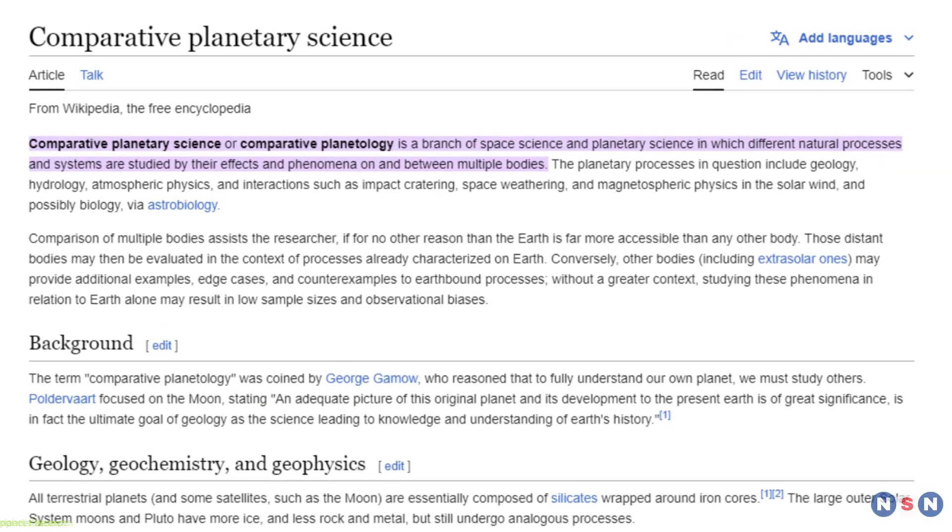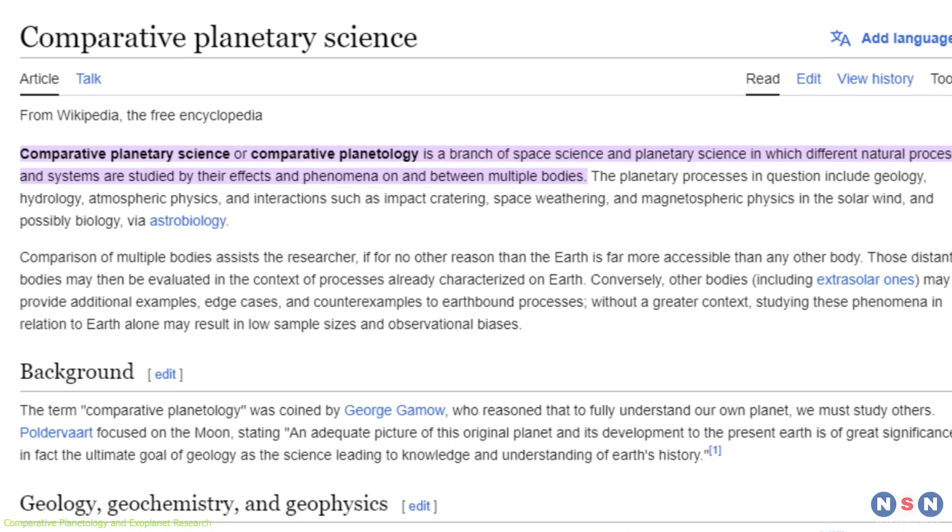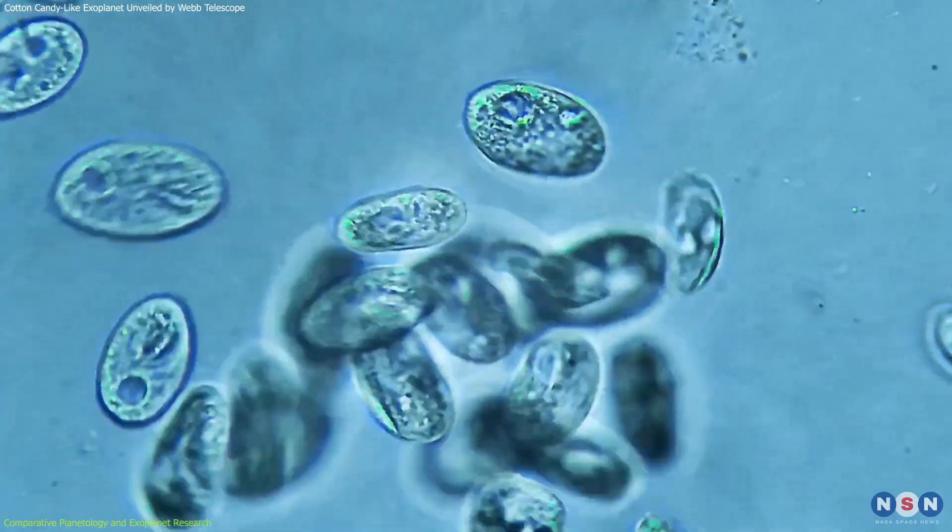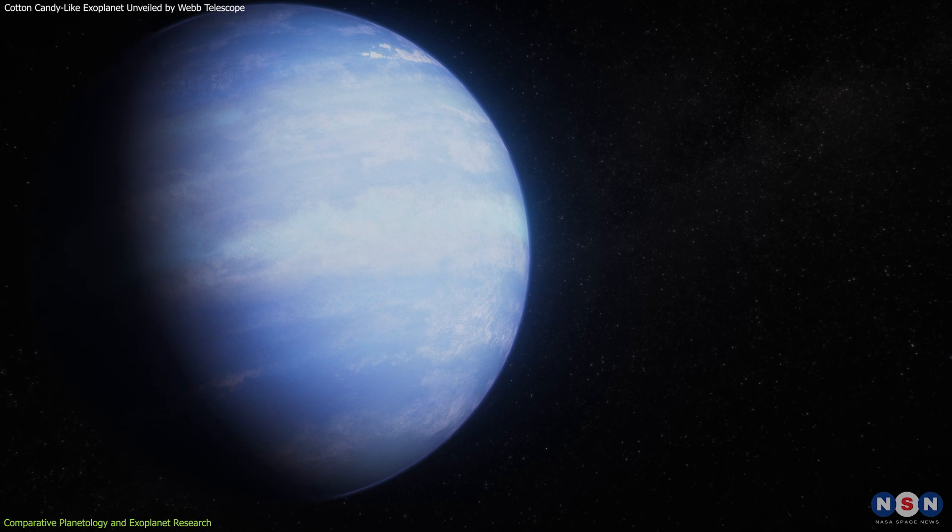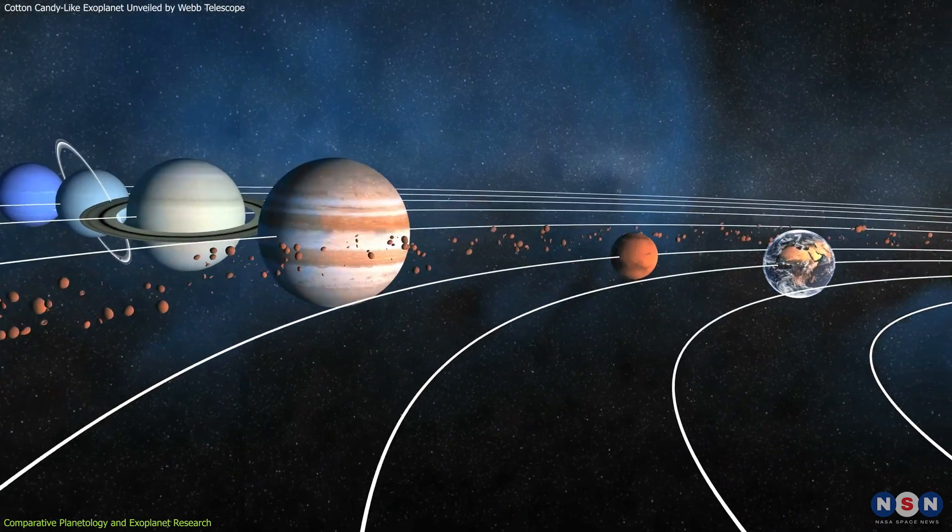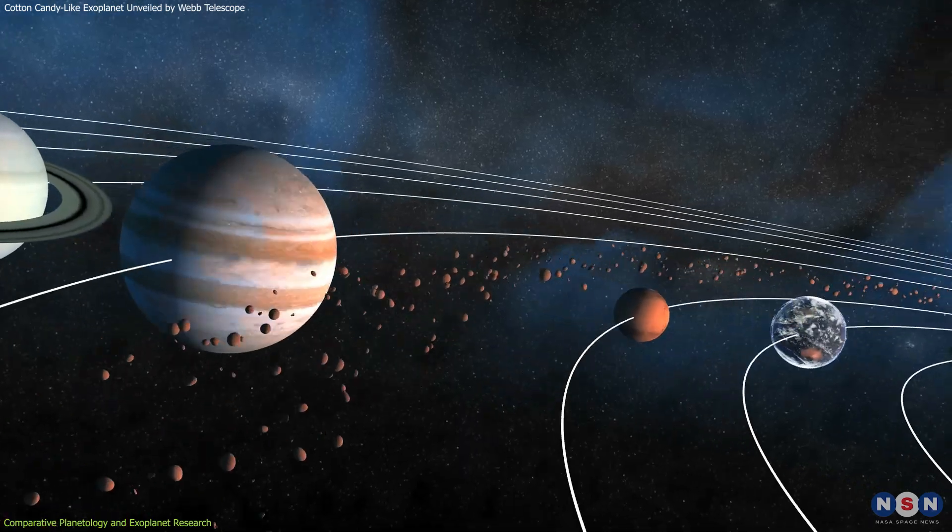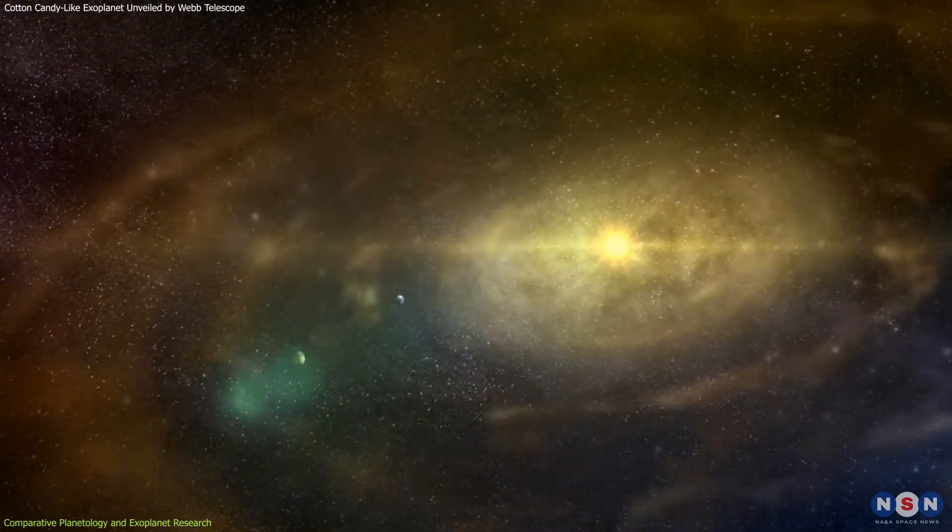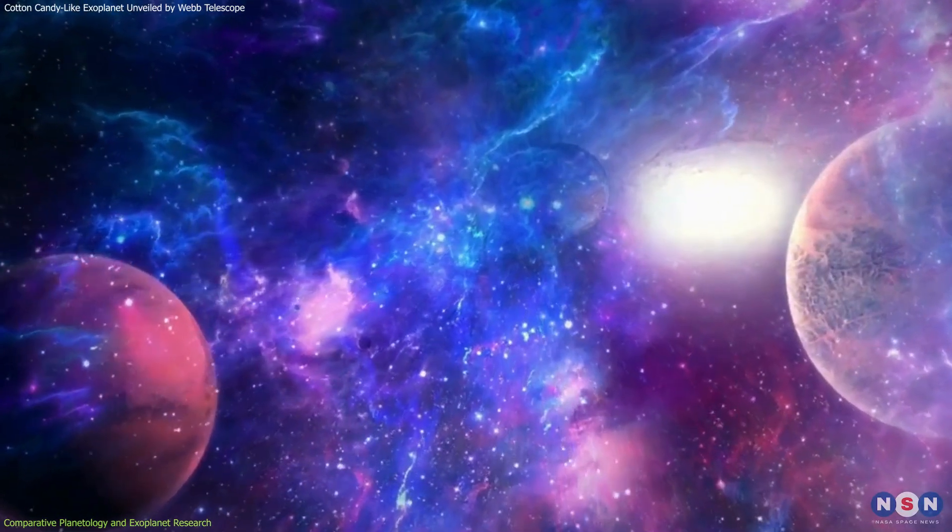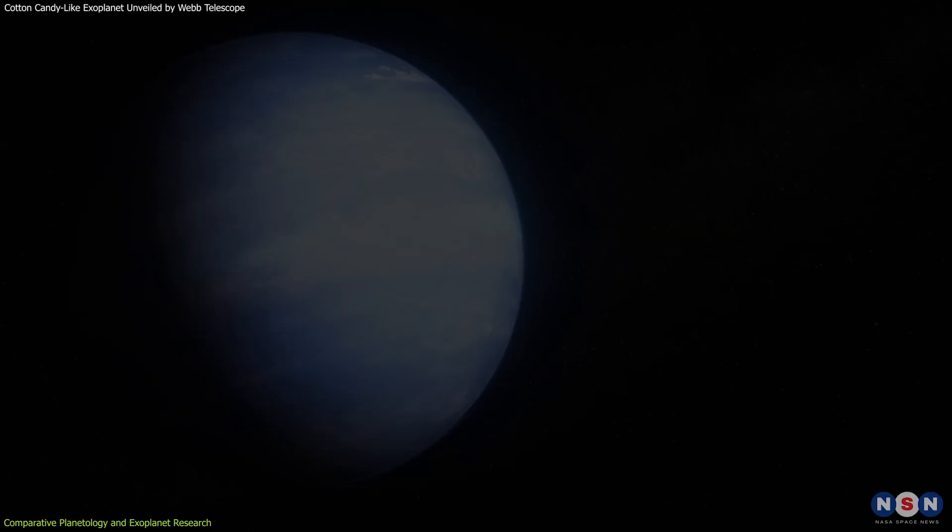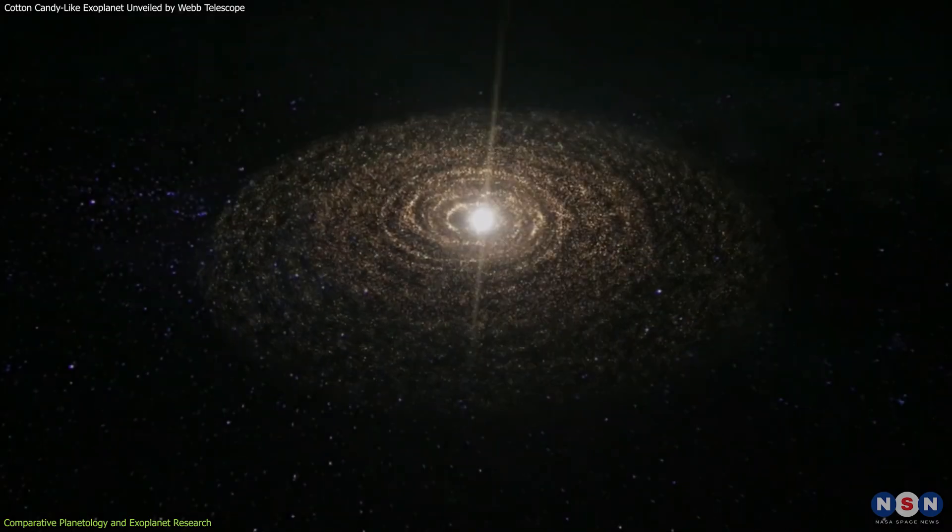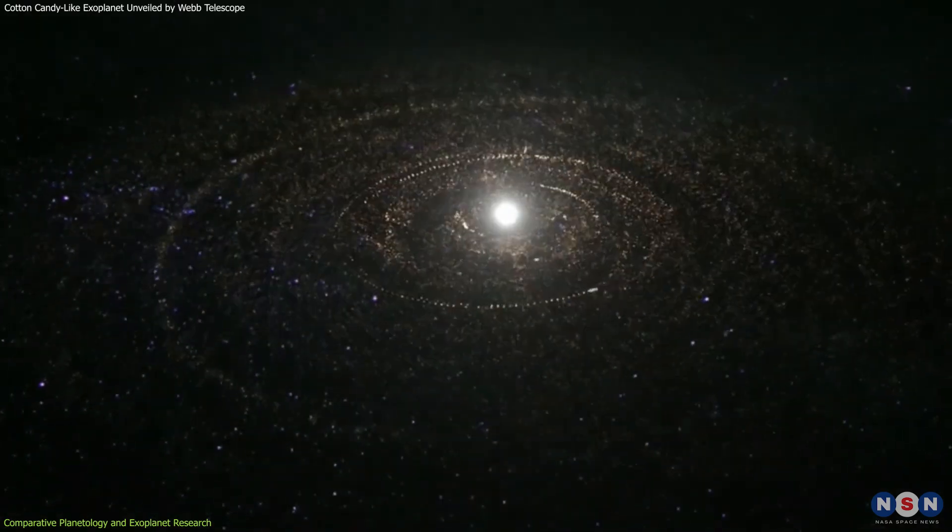Comparative planetology, the study of planets to understand their formation, structure, evolution, and potential for hosting life, is crucial for contextualizing WASP-107b. By comparing it to both the gas giants of our solar system and other exoplanets, scientists refine their models of planetary systems and gain insights into the diversity of worlds in our galaxy. This approach allows researchers to identify key similarities and differences critical in understanding planetary evolution.